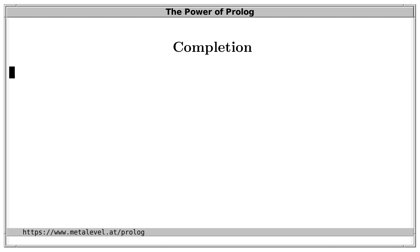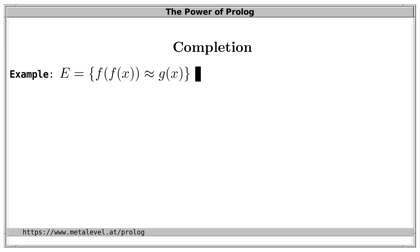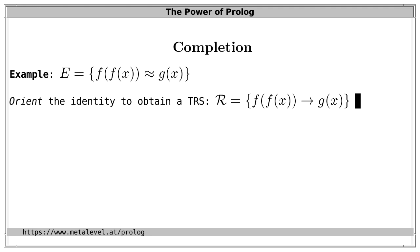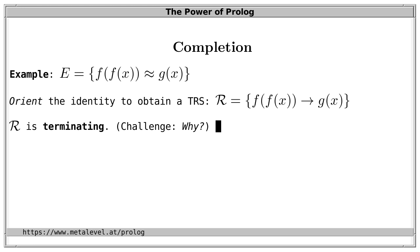If we manage to build such a convergent system, we can use it to solve the word problem: take two terms, rewrite both to their unique normal forms, and since the system is convergent and therefore terminating, this terminates after a finite number of steps. Then we only compare the normal forms — if they are identical, the original terms are equal, and vice versa. To carry out this approach, we use an idea called completion. As a motivating example, consider the identity f(f(x)) = g(x), and we want to obtain a convergent TRS to solve the word problem of this theory.